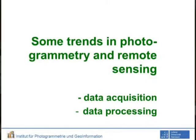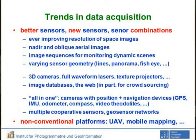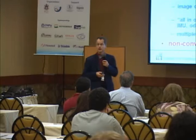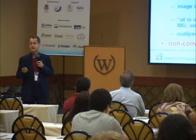Some trends in photogrammetry and remote sensing. There is, of course, some in data acquisition and some in data processing. If you look at the sensors, there are better sensors than before, there are new sensors, and there are combinations of sensors. All of that is related to imaging. We have better resolutions — finer, smaller pieces from space. We have linear arrays with different geometries which need to be fused. Time comes into many of these things.